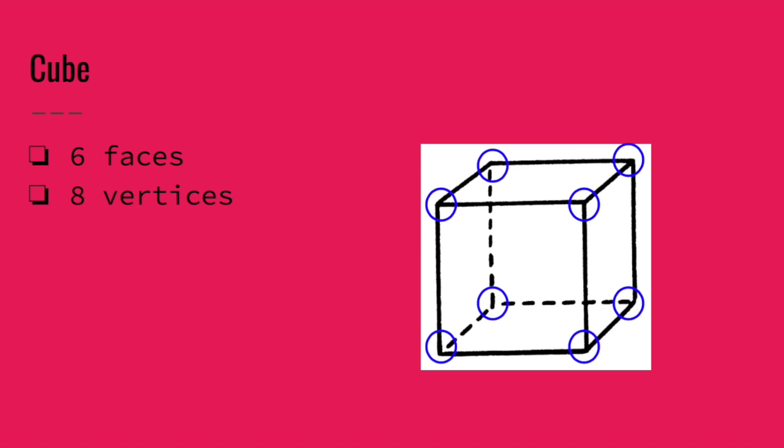The first shape we have is a cube. A cube has six faces and eight vertices. I decided to use my little tool to circle all of our vertices so you can see the corners or the vertices where the lines connect in each shape.